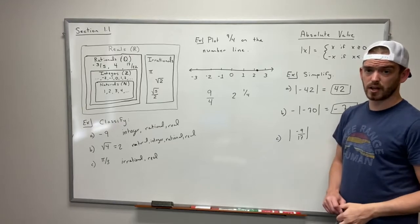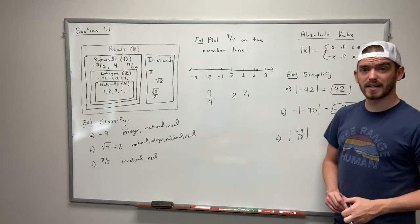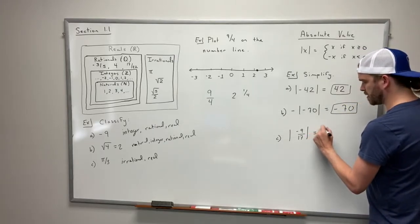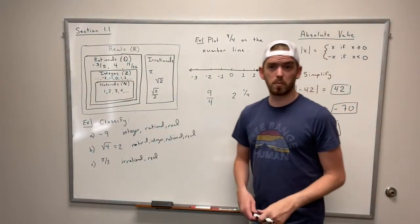Finally we have a fraction. The absolute value of negative 9 seventeenths. The same principle applies even if it's a fraction. So this is going to be positive 9 seventeenths.